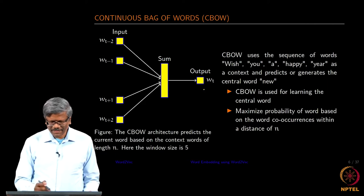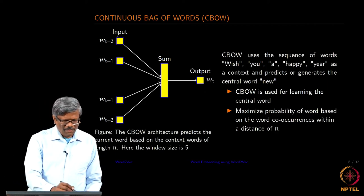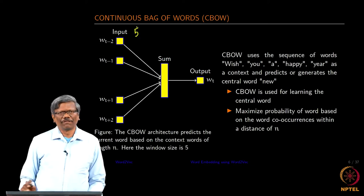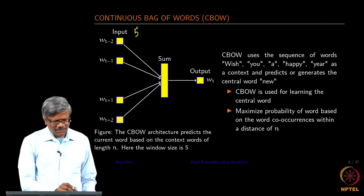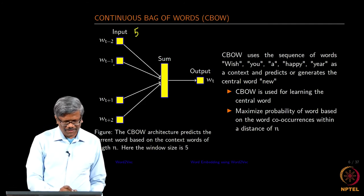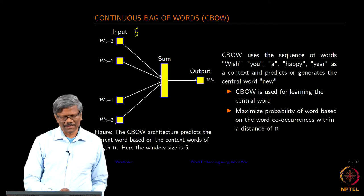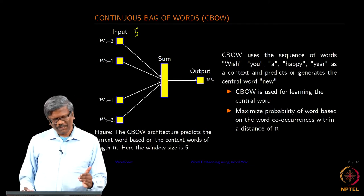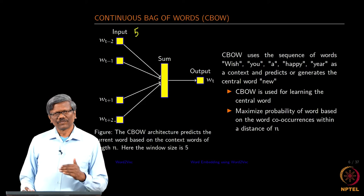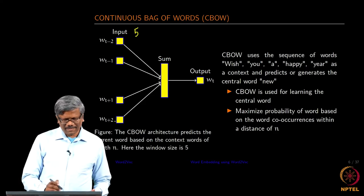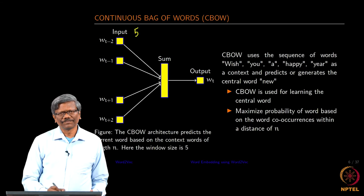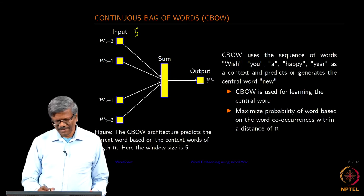In the case of CBOW, this is a 5-window word. We have W(t-2), W(t-1), W(t+1), W(t+2). Every time we will be inputting one of these to the network, then the linear sum is taken, and then the output word is produced.